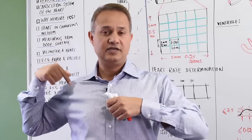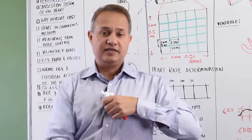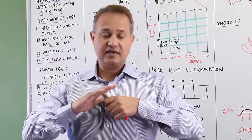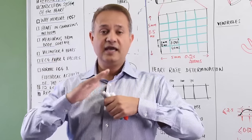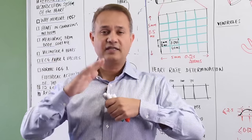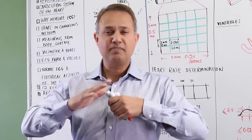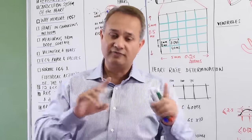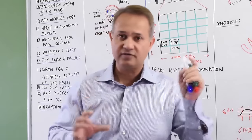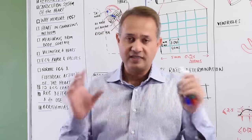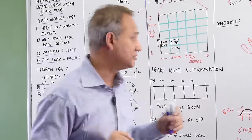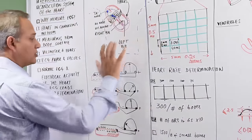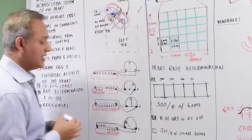Lead II has the negative end attached to the right arm and positive end attached to the left leg. Because the heart is oriented such that most of its current moves along this axis, Lead II is the best lead to see the proper potentials in a normal heart. The left side and right side are almost on the same axis as the electrical current, so current is maximally seen in Lead II.